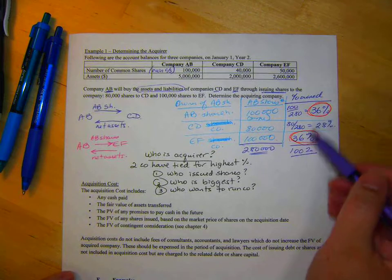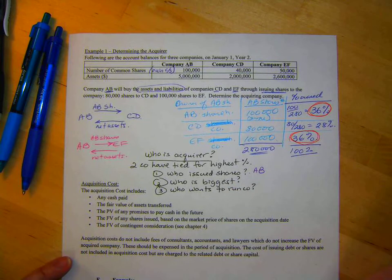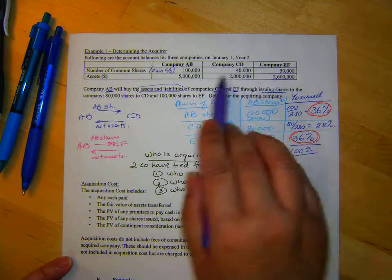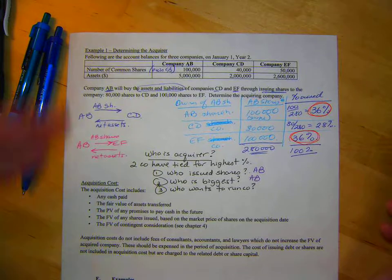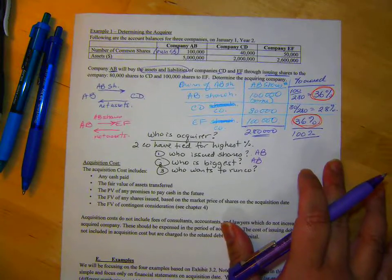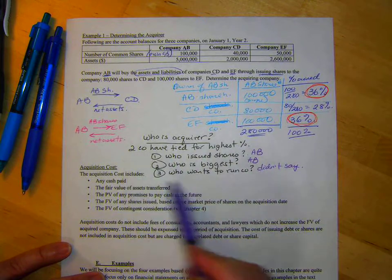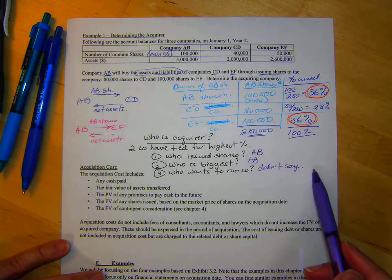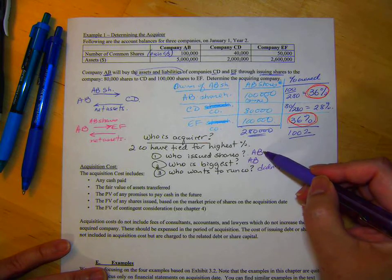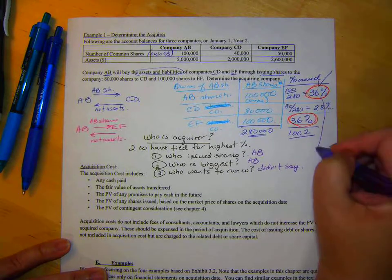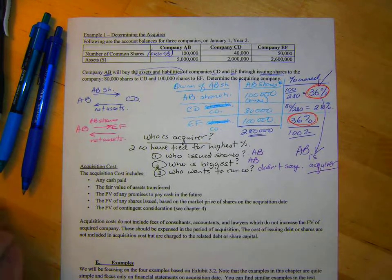So, we're looking between these two. Who issued the shares? AB. Who's the biggest company? Well, if we're basing it on assets, the only issue we have is AB. Now, did EF in particular express any desire in this region to run the company and influence the policies and make decisions? No, they didn't say anything. So, what do you conclude from our little discussion here? Who is the acquirer? Who actually owns and runs things? Well, these are tied, but because AB issued the shares and they're the biggest, AB is. AB is the acquirer.